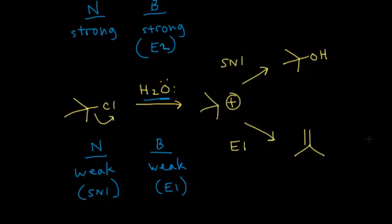So for a tertiary alkyl halide, you could get E2, SN1, or E1 — three possibilities. Remember to first look at the structure of your alkyl halide, then look at your nucleophile and classify it as strong or weak, then think about it as a base — either strong or weak. With those clues, you can usually figure out the products of your reaction. Also, an E1 reaction is favored at high temperatures. Increased temperatures favor an E1 mechanism, so you could get more E1 product by increasing the temperature.